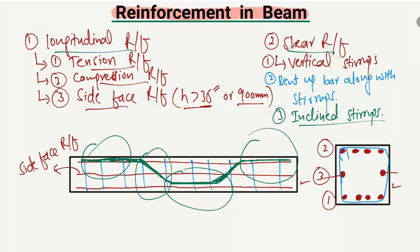These are the different types of reinforcement in beams: longitudinal reinforcement and shear reinforcement. Longitudinal reinforcement is mainly provided for tensile stresses, and shear reinforcement is mainly provided for shear stresses. I hope you understood. Don't forget to subscribe to our channel. Thank you for watching.